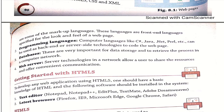There are many programming languages available to code web pages, like C, C++, Java, and others. There are various databases available for storing and retrieving data in a computer network, and many web servers are also available. Server technology or a network allows users to share resources and offers convenient communication.